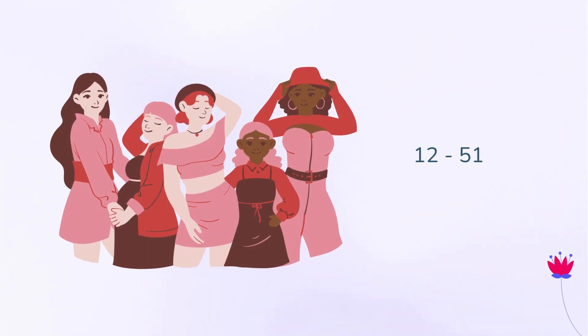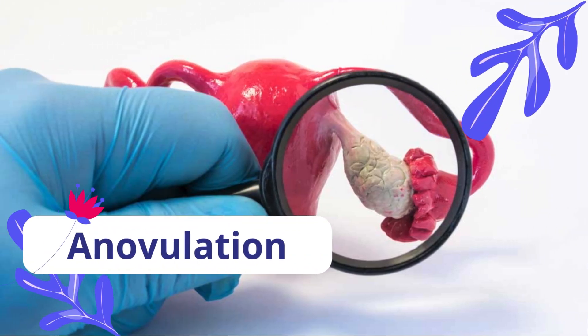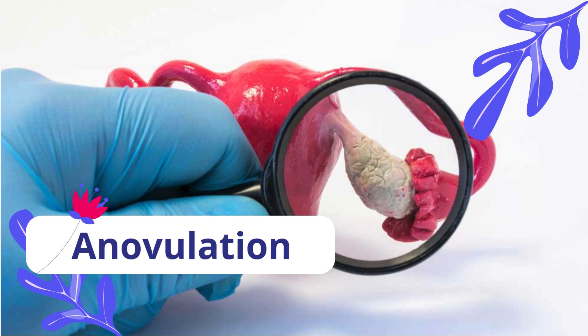Intermittent and chronic anovulation are common in the reproductive years, which is usually between the ages of 12 and 51. However, it most frequently occurs during the time around the first menstrual cycle, i.e. menarche, and around the time of one's last menstruation, i.e. menopause. In this video, we will talk about this disease, anovulation, by answering these questions.